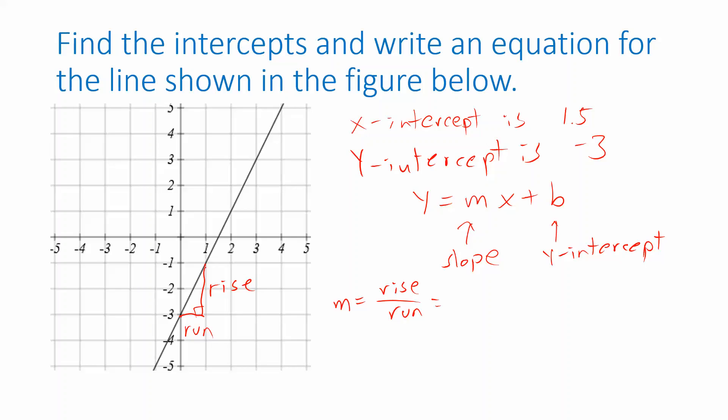And with the triangle I drew here, it looks like the rise is two units with a run of one unit. And so that simplifies to two.